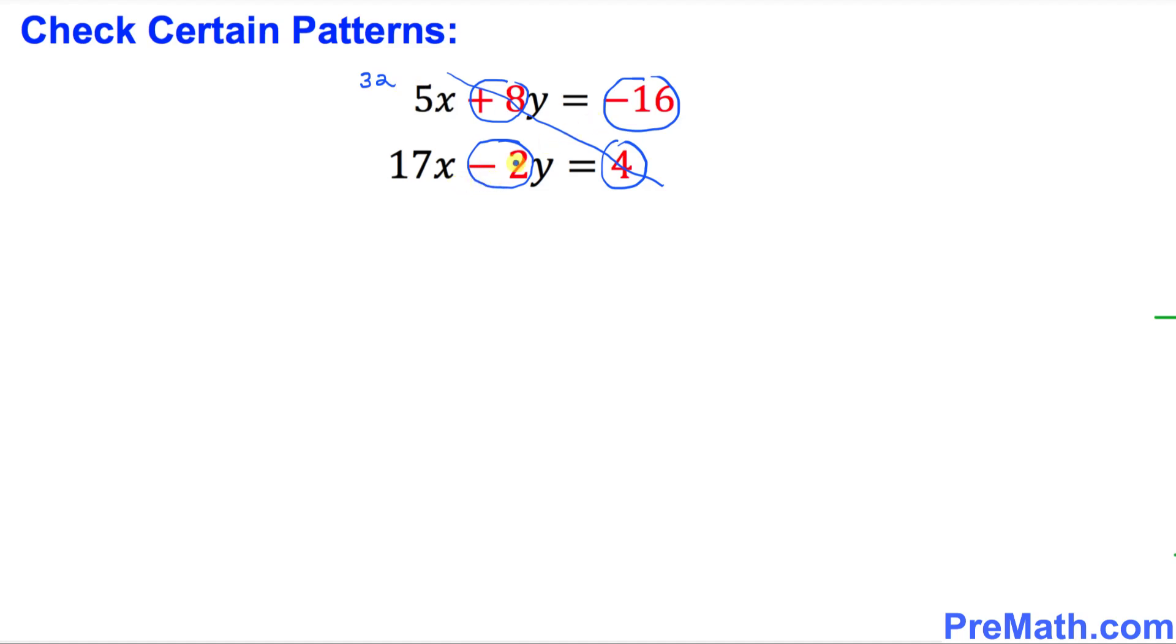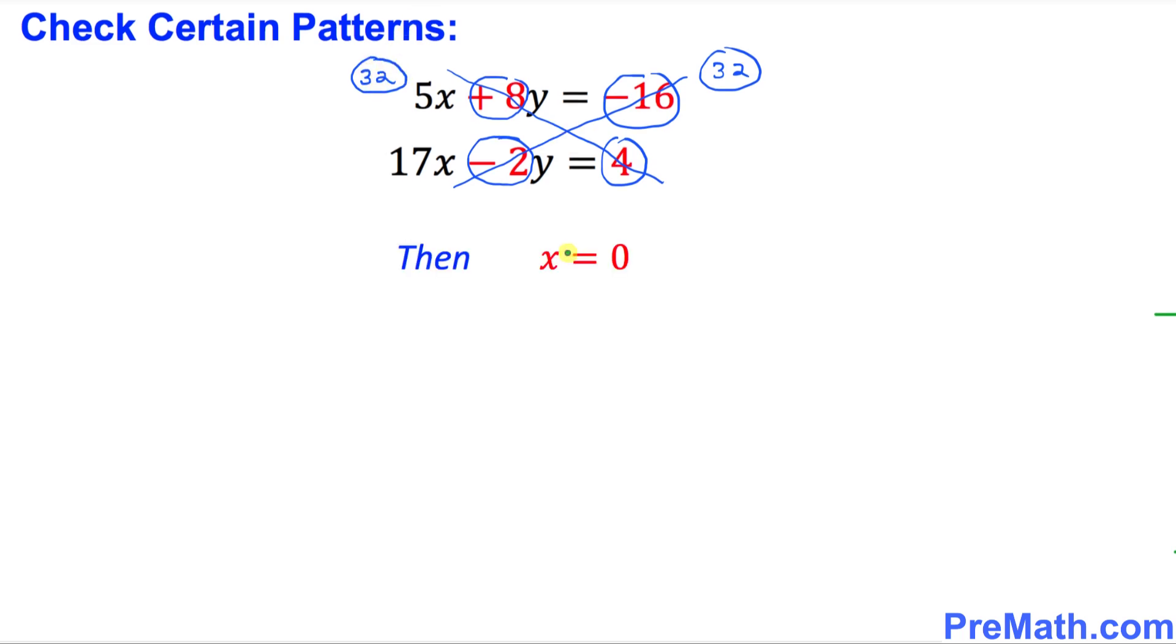And if we do the other way cross multiplication, negative 16 times negative 2 is going to be 32. As long as these two numbers when we cross multiply have the same value, that means we are going to have x equal to 0.